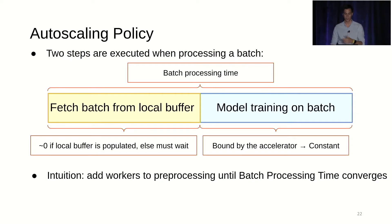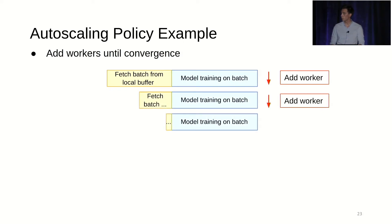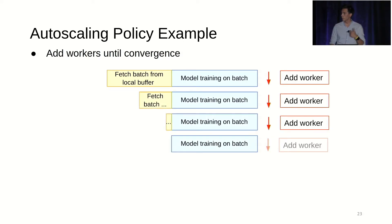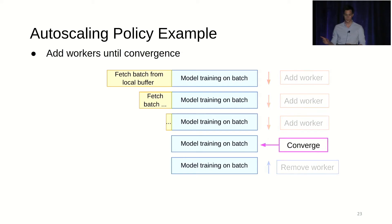We keep adding resources and stop when we see that the time doesn't improve anymore. In this example: we start with an initial batch processing time, add a worker and see improvement, keep doing so, until CacheU notices the batch processing time doesn't improve by adding the last worker. Because it's superfluous and only costs money, we remove it and converge to a scale where the fetching time is essentially nonexistent.